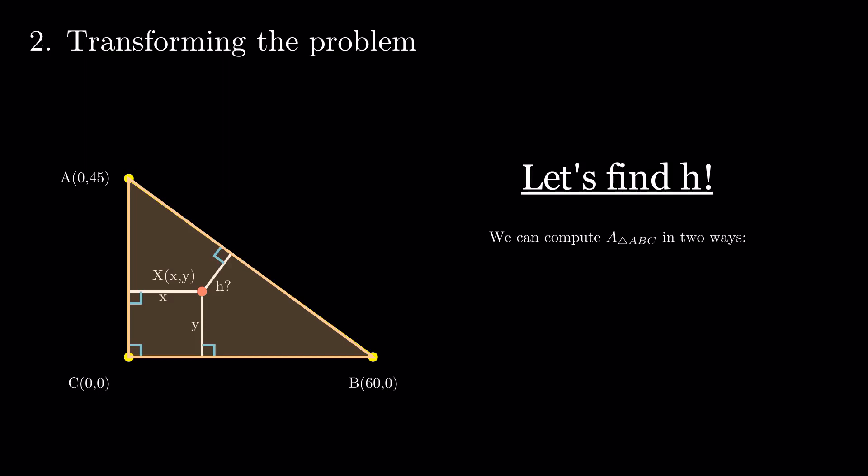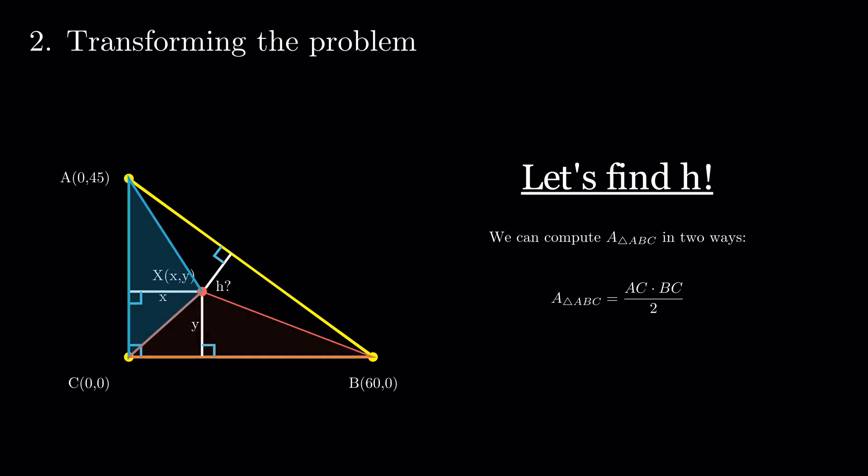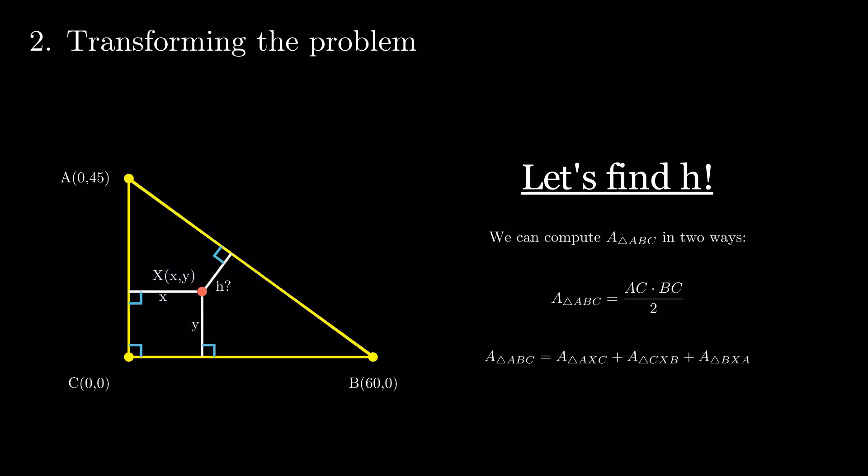We see that it would come up in an area formula, so we go on and compute ABC's area in two ways. First, using the area formula in triangle ABC. Then, as the sum of areas of triangle AXC, CXB and BXA.